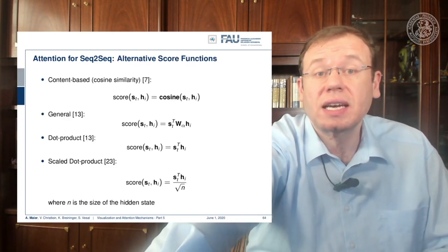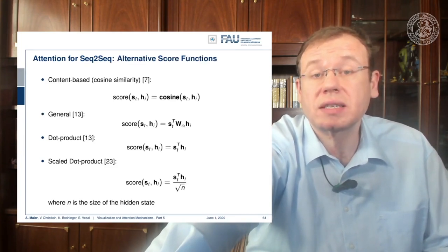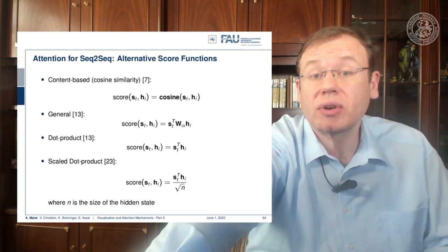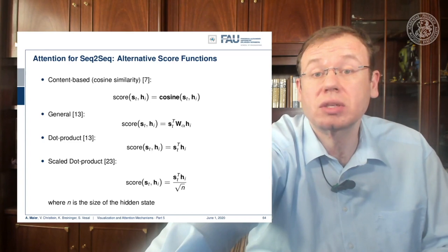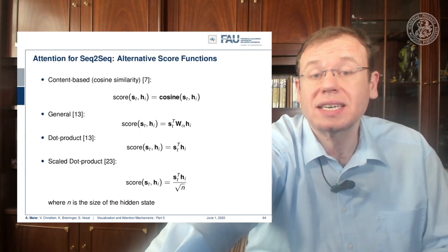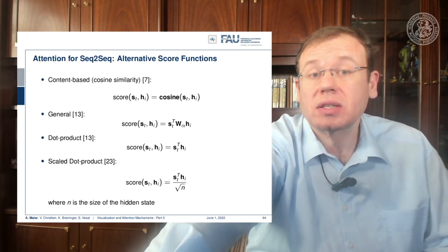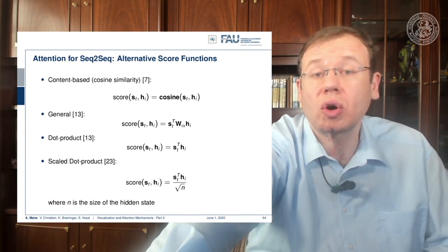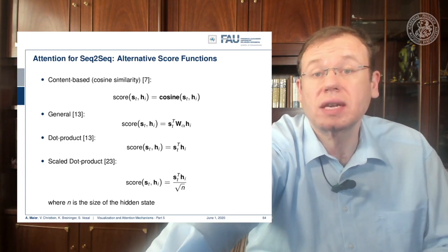There are different alternatives for the score function. For example, in reference 7 they use the cosine between the two states. You could generally use an inner product, a generalized inner product using some weight matrix, a dot product which is essentially just the correlation between the two states, or a scaled dot product that also respects the size of the hidden state. All of these have been explored, and we are essentially trying to learn a comparison function that tells us which state is compatible with which other state.